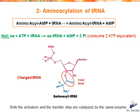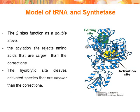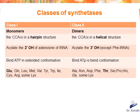The equivalent of two molecules of ATP are consumed in the synthesis of each aminoacyl-tRNA. The enzyme tRNA synthetase has two sites: the activation site and the editing site. Both are close to each other and they function as a double sieve. The acylation/activation side rejects amino acids that are larger than the correct one, and the editing side, also known as the hydrolytic site, cleaves activated species that are smaller than the correct one.